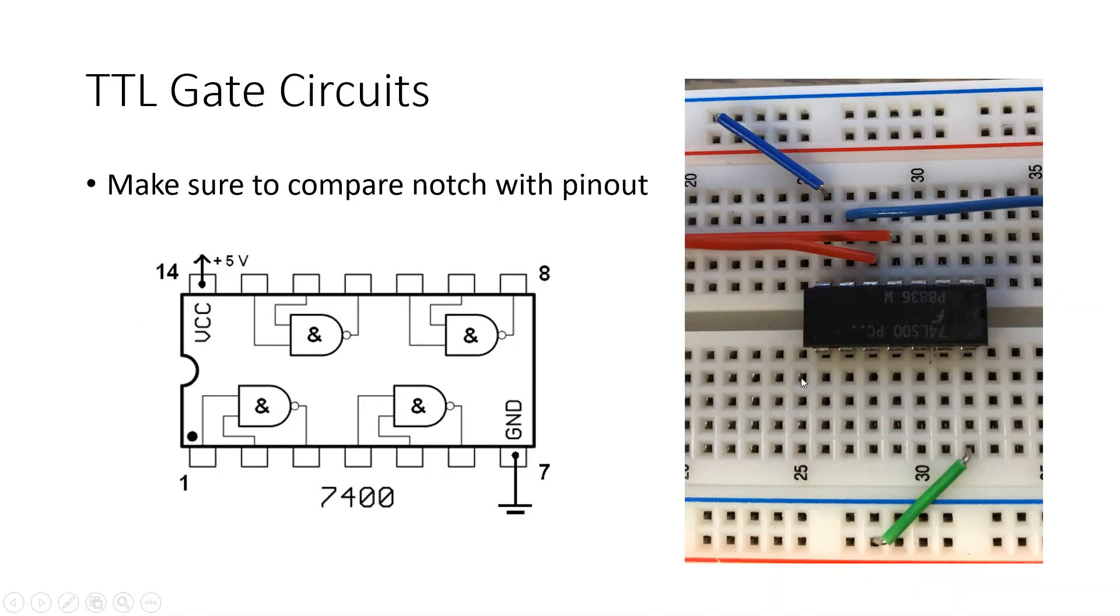Next the TTL gate circuit. As you can see here this is the pin out of a TTL NAND gate 74000 series circuit or chip. We have two inputs and one output. We have to provide 5 volts to one pin and a ground to another.